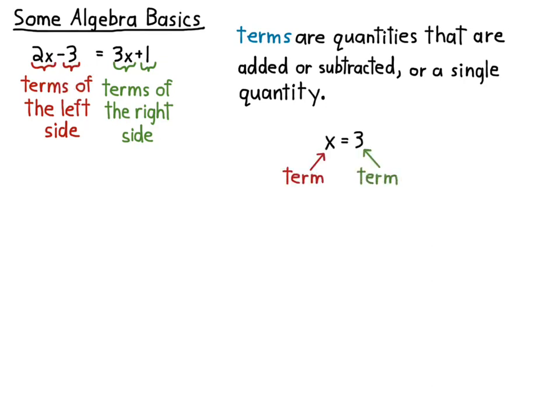Okay, now this is also a term, because this is a single quantity. So x is a term of the left side of the equation. 3 is a term of the right side of the equation.